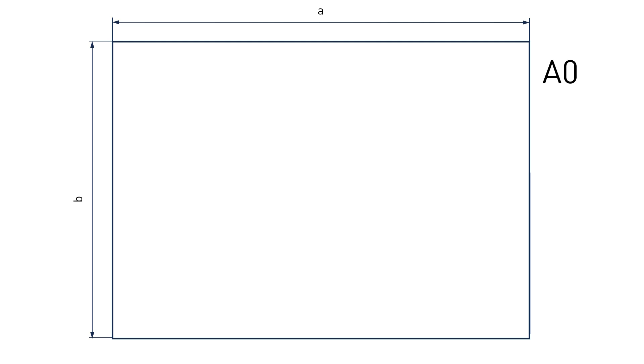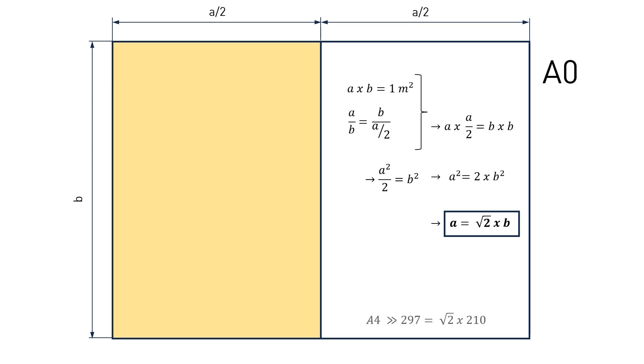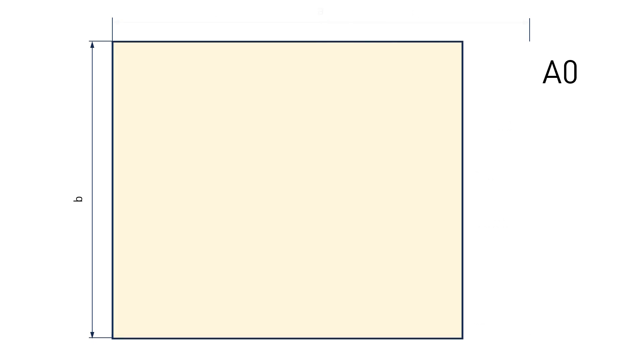Con esas premisas, a ese formato original le daremos un tamaño de un metro cuadrado. Por otro lado, podemos hacer cuatro cuentas entendiendo que las proporciones entre largo y ancho son las mismas para cada formato. Entonces, la relación entre ellos tiene que ser forzosamente raíz de 2. Lo puedes comprobar con las medidas que conoces del A4, que son 210 x 297.